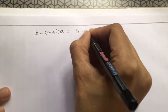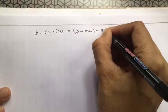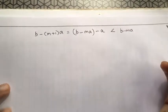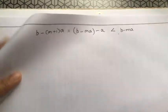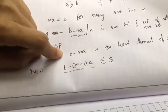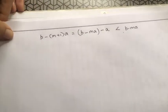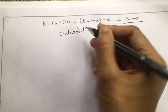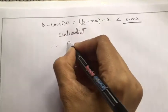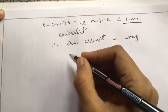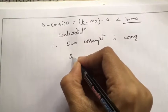We can rewrite b − (m+1)·a as b − m·a − a, which is less than b − m·a. But this is a contradiction, because b − m·a was considered the least element. Therefore our assumption is wrong.